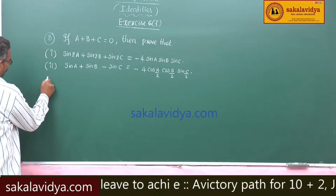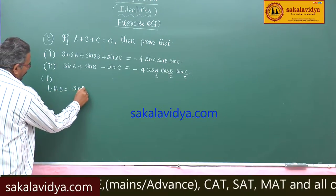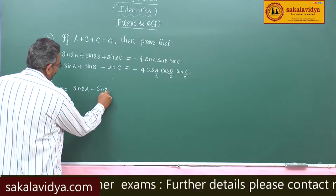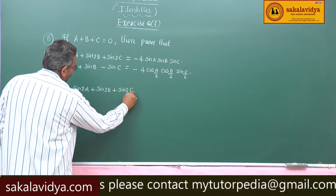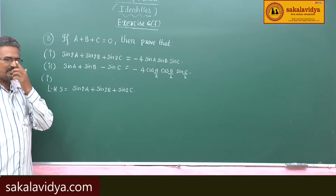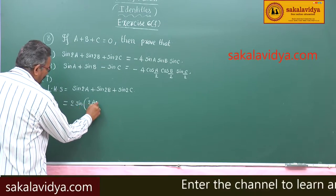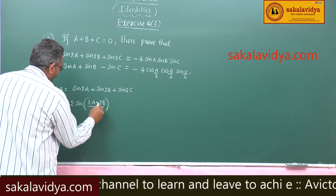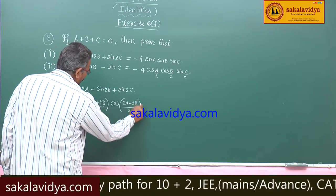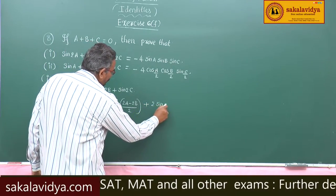Let us solve the first problem. Starting with the left hand side: sine 2A plus sine 2B plus sine 2C. First, consider the first two terms, sine 2A plus sine 2B, which is in the form sine C plus sine D. So we can write 2 sin((2A+2B)/2) cos((2A-2B)/2) plus sine 2C. And sine 2C equals 2 sin C cos C.